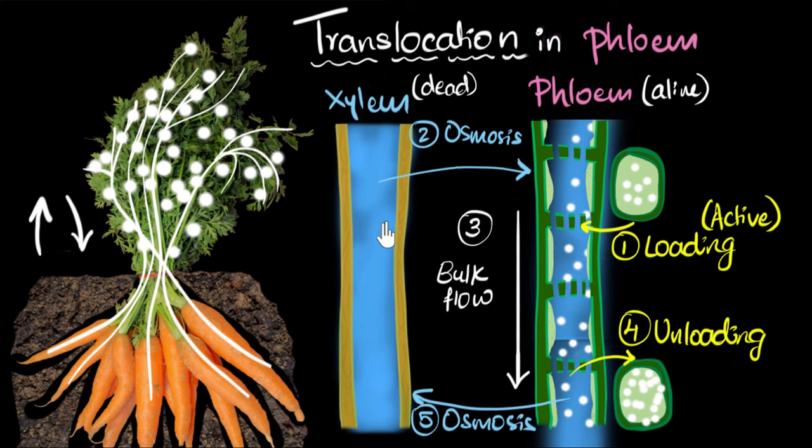And xylem cells don't need to be alive because the mechanism of xylem is only based on physical forces like suction or the pressure from the bottom, from the roots. The cells don't need to use any energy so they can afford to be dead. But phloem needs to be alive.